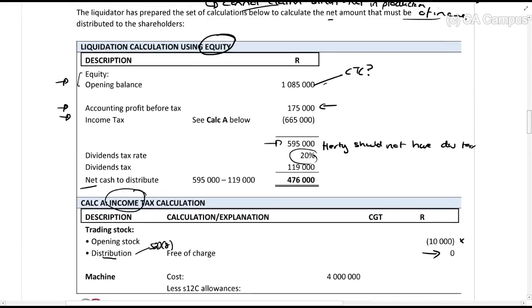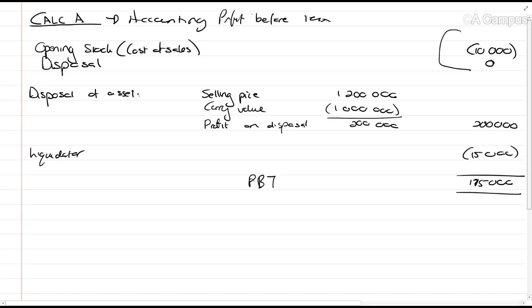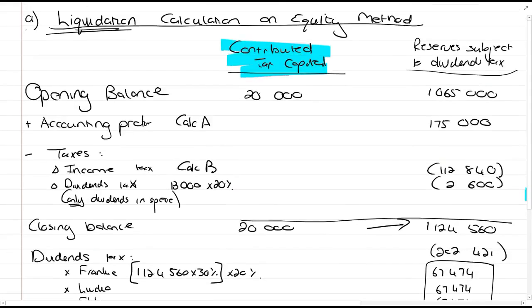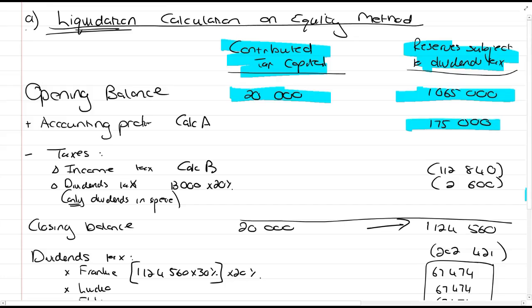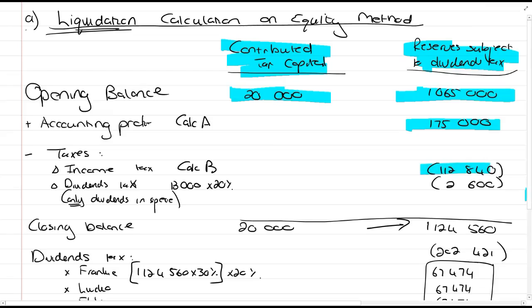So, we start here with the liquidation calculation using equity. They start with equity opening balance 1085. So, let's go and make sure that we talk about what we did differently. We first of all split it between contributed tax capital and reserve dividend tax. So, this opening balance, can you see, we've split it which is what they didn't do. The accounting profit was 175,000 which they tell us is correct. We've also done that. Then, the income tax calculation. They calculated 665,000. We can see we've calculated 112,840.